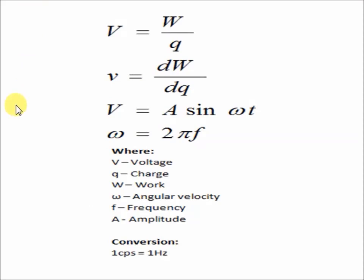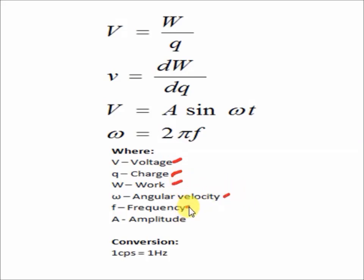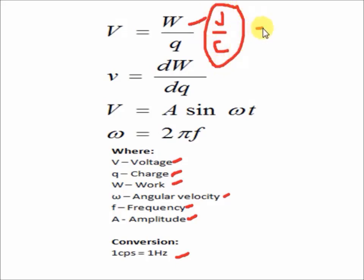The formula for voltage is V = W over Q, or in derivative form, V = dW over dQ. For waveforms, the formula is V(t) = A·sine(ωt), where ω = 2πF. Where V is voltage, Q is charge, W is work, ω is angular velocity, F is frequency, and A is amplitude. The unit of work must be joules and the unit of charge must be coulombs, so joules per coulomb equals volts. Also, 1 CPS (cycle per second) equals 1 hertz.